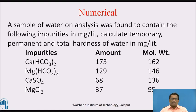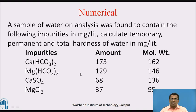Next numerical: A sample of water on analysis was found to contain the following impurities in milligrams per litre. Calculate temporary, permanent, and total hardness of water. Calcium bicarbonate: 173 mg/L, magnesium bicarbonate: 129 mg/L, calcium sulphate: 68 mg/L, magnesium chloride: 37 mg/L.